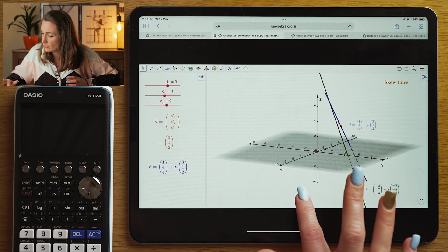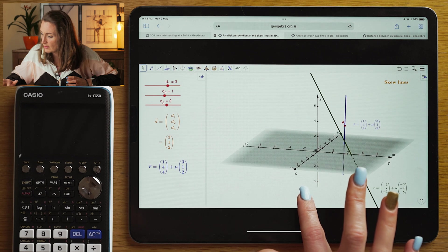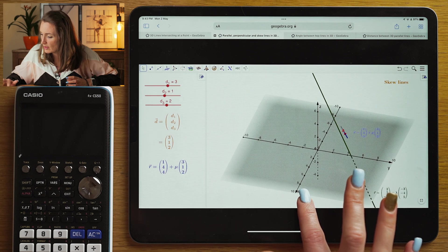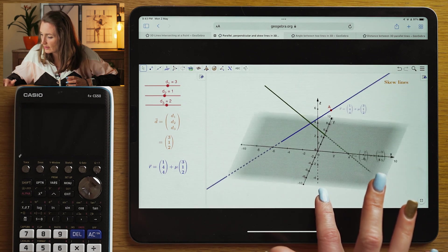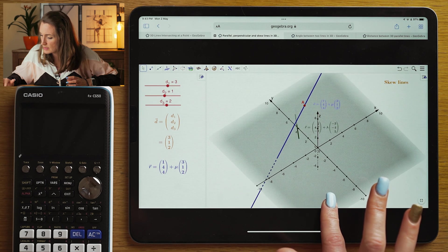So you can see that these are skew lines. If you look at it here from the side, you can see that these lines will in fact never intersect. You can see they're always going to just miss each other.